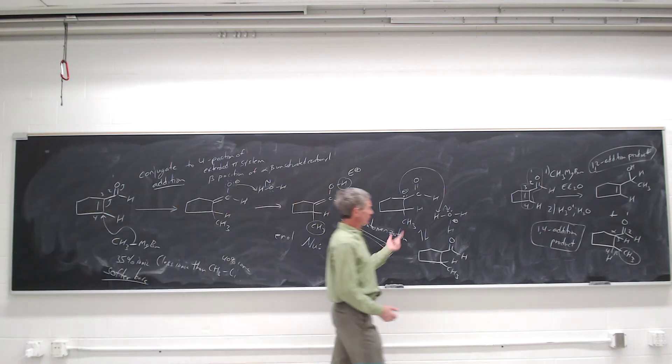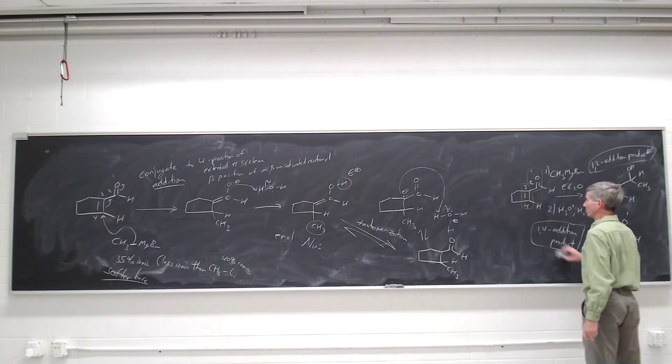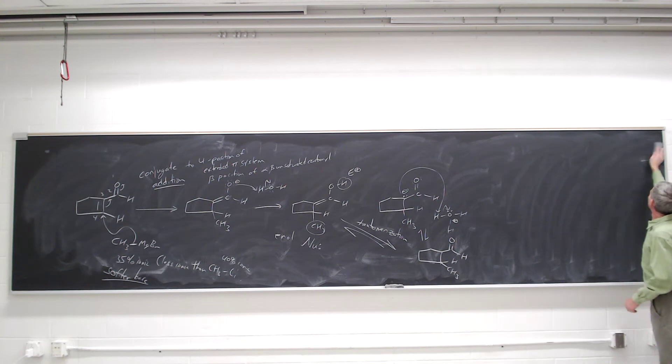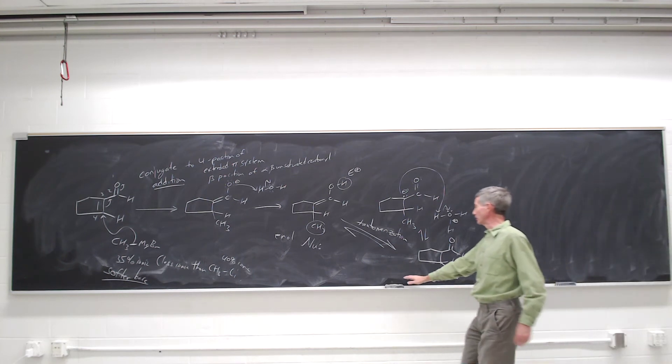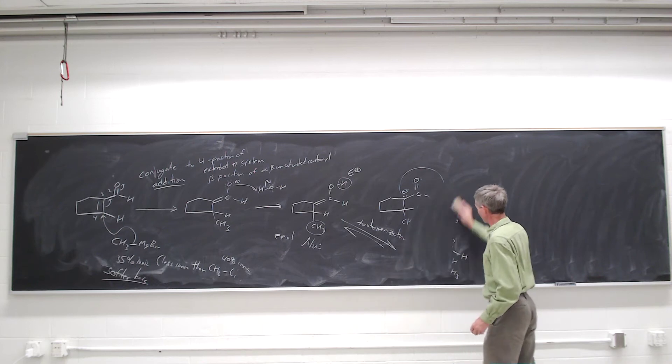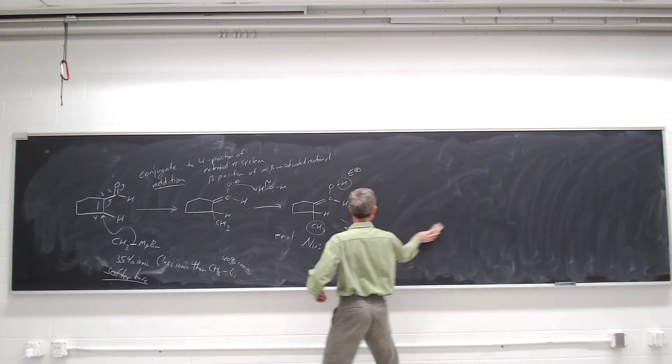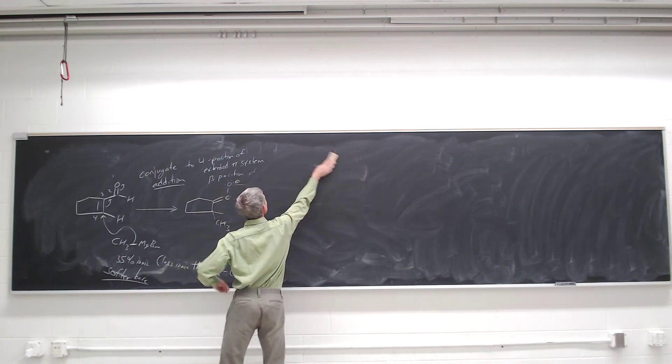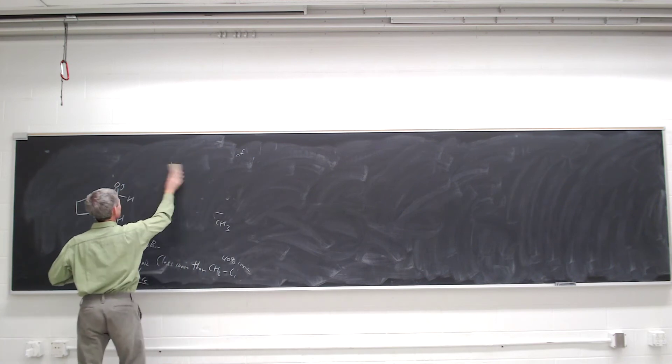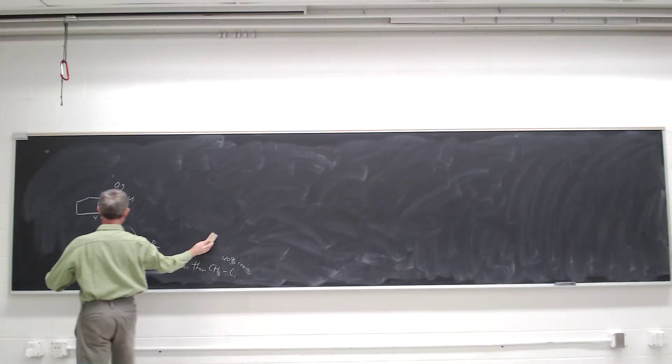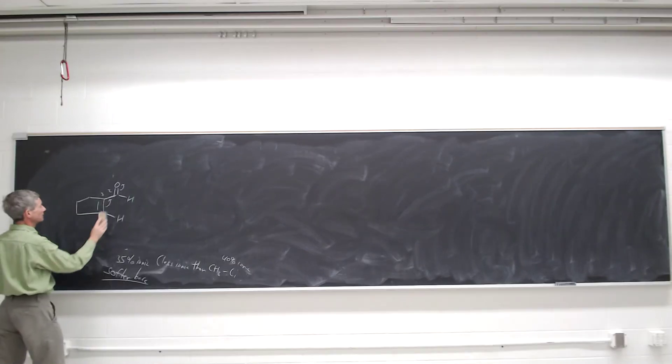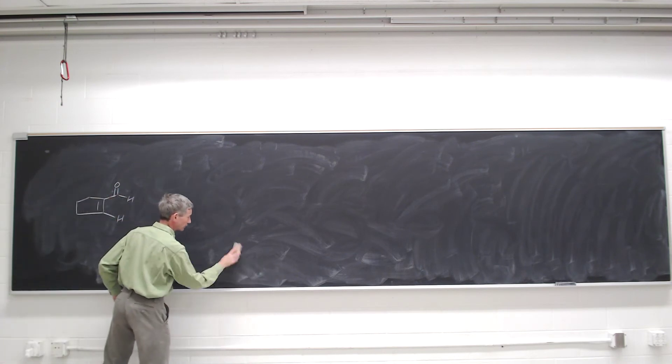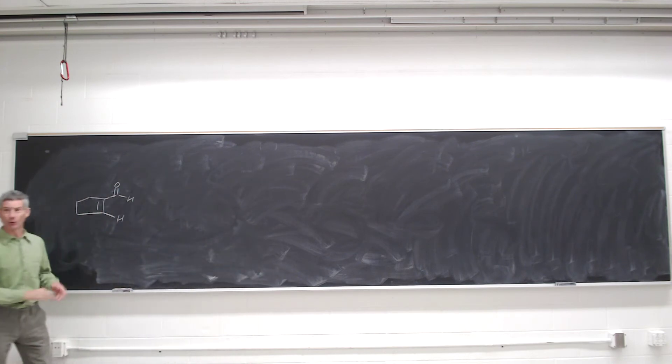So when do things undergo conjugate addition to give one-four addition products, and when do things undergo ordinary nucleophilic acyl addition to generate the one-two addition product? To completely understand that, you need to understand something about what this conjugated pi system actually looks like. We need to understand a little bit about the orbitals that are involved here.